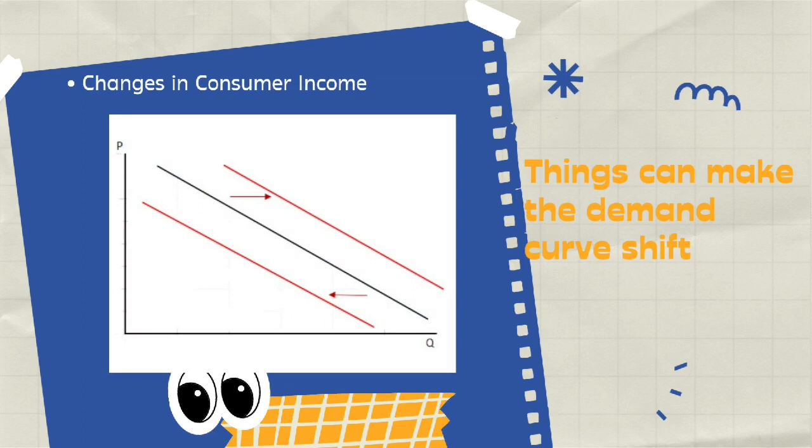The second cause of a demand curve shift is a change in consumer income. Shifts in the demand curve occur because of changes in consumers' or community income, resulting in a change in demand for goods. If consumer income increases, the quantity demanded of goods increases and the demand curve shifts to the right.